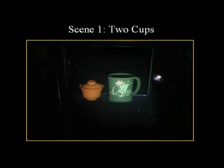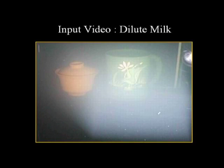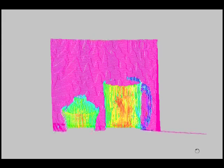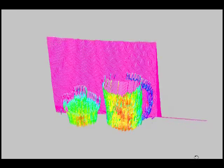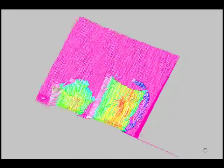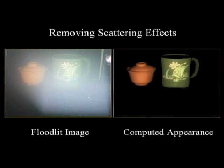The first experiment we show uses a scene that contains two cups. When the tank is filled with dilute milk, the adverse effects of scattering are clearly seen in the floodlit image of the scene. We show light stripe scanning in dilute milk. Notice the light plane itself becomes brightly visible due to scattering, which makes it difficult to detect the intersection of the light plane with the object using simple thresholding. Our algorithm detects the intersections reliably despite the scattering, reconstructs the 3D shape of the scene, and computes the appearance of the scene without any scattering effects, as if seen through clear air.